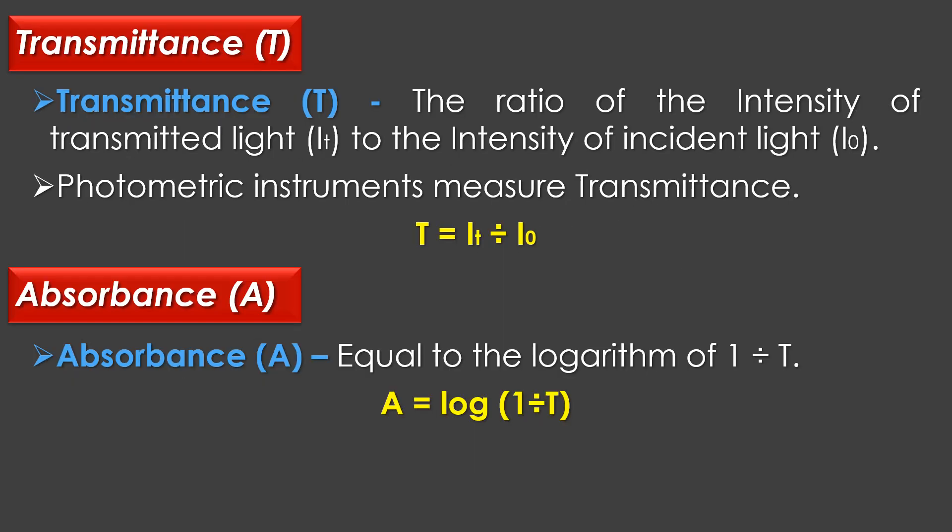Transmittance: The ratio of the intensity of transmitted light to the intensity of incident light is called transmittance. Photometric instruments measure transmittance. In mathematical terms, transmittance is measured as T = It / I₀, where It represents the intensity of transmitted light and I₀ represents the intensity of incident light.